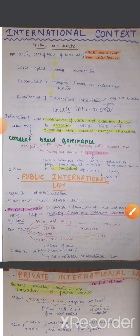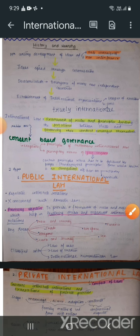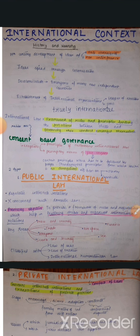International law can be categorized into public international law and private international law. Public international law regulates inter-state relations — jo humare different nation states hain, unki jo relations hain, usko govern karta hai public international law. It's not concerned with domestic laws; these are not made in domestic legislatures.